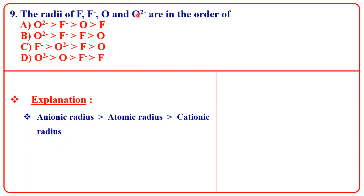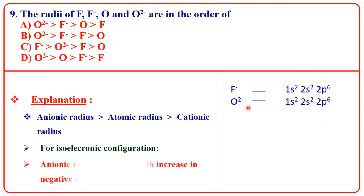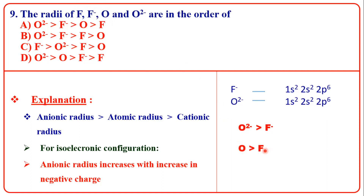F⁻ and O²⁻ have the same electronic configuration — isoelectronic configuration. For isoelectronic configuration, anionic radius increases with the increase in negative charge. O²⁻ has a greater negative charge than F⁻, so O²⁻ is greater than F⁻. The correct order is O²⁻ > F⁻ > O > F. The answer is A.